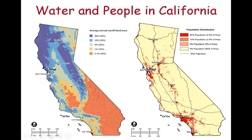Significant populations also live in San Francisco, Sacramento, and somewhat in the central valley area. Most of the water is in the northern part where population is relatively sparse, whereas in the southern part water is not as widely available but population density is quite high.